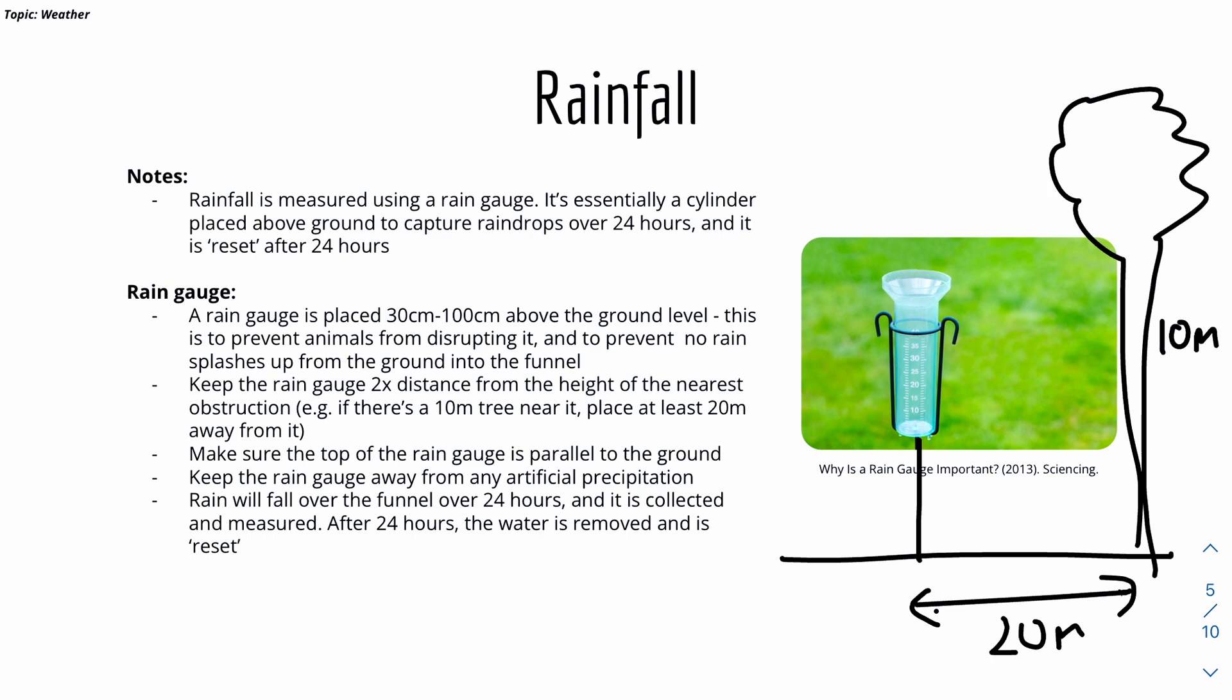We should also make sure that the top of the rain gauge is parallel to the ground. We also need to keep the rain gauge away from any artificial precipitation. As it is quite obvious that these sources will affect the reading. The rain will fall over the funnel for 24 hours. After 24 hours, it's basically collected, the water is measured, the volume is measured, and the water is removed. This repeats every 24 hours.